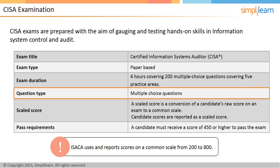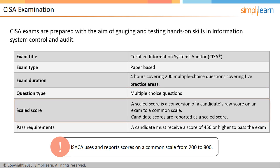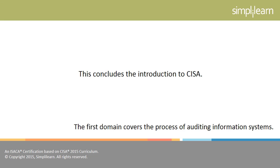All questions have four multiple-choice options and are intended for one correct answer. The CISA student should choose the correct answer from the choices. ISACA uses a scale from 200 to 800 when grading the examination, and the minimum pass mark for the CISA exam is 450 marks. This concludes the introduction to CISA. Let us begin the course with the first domain, The Process of Auditing Information Systems.